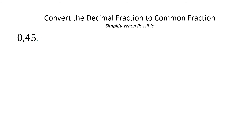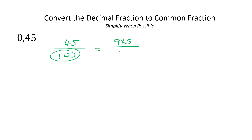We can see that there's two decimal places from the end, so we just say 45 over 100, and then simplify. I know that 45 you could write it as nine times five, and 100 as twenty multiplied by five. So the fives could cancel, and then you're left with nine over 20 — and this can't simplify any further.